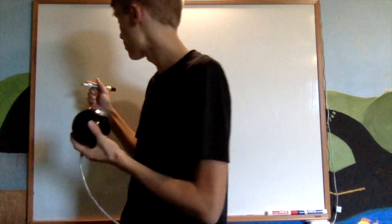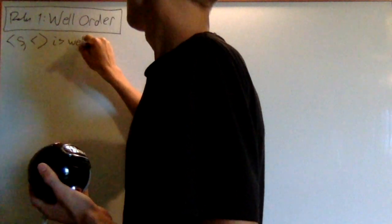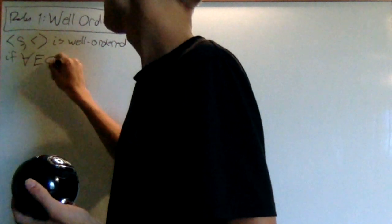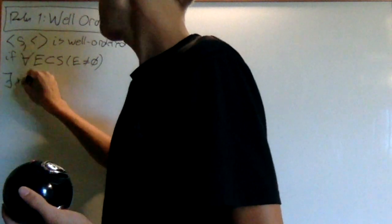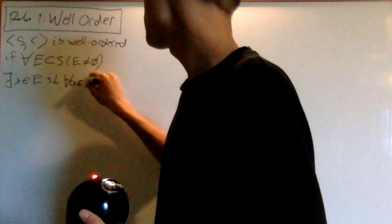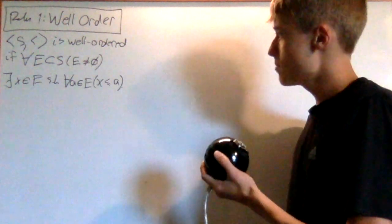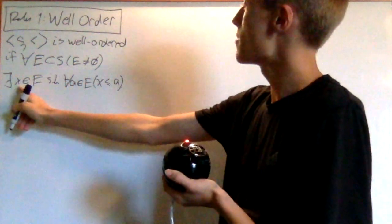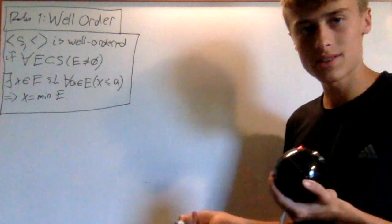So first of all, what is a well order? A well order is basically what we discussed last time, but a little less general. An ordered set s with an order less-than is well-ordered if for every non-empty subset of s, there exists an element x of that subset such that every other element in that set is greater than or equal to x. Basically, for every non-empty subset there is a minimal element in the set. This is obviously true for ordinals.